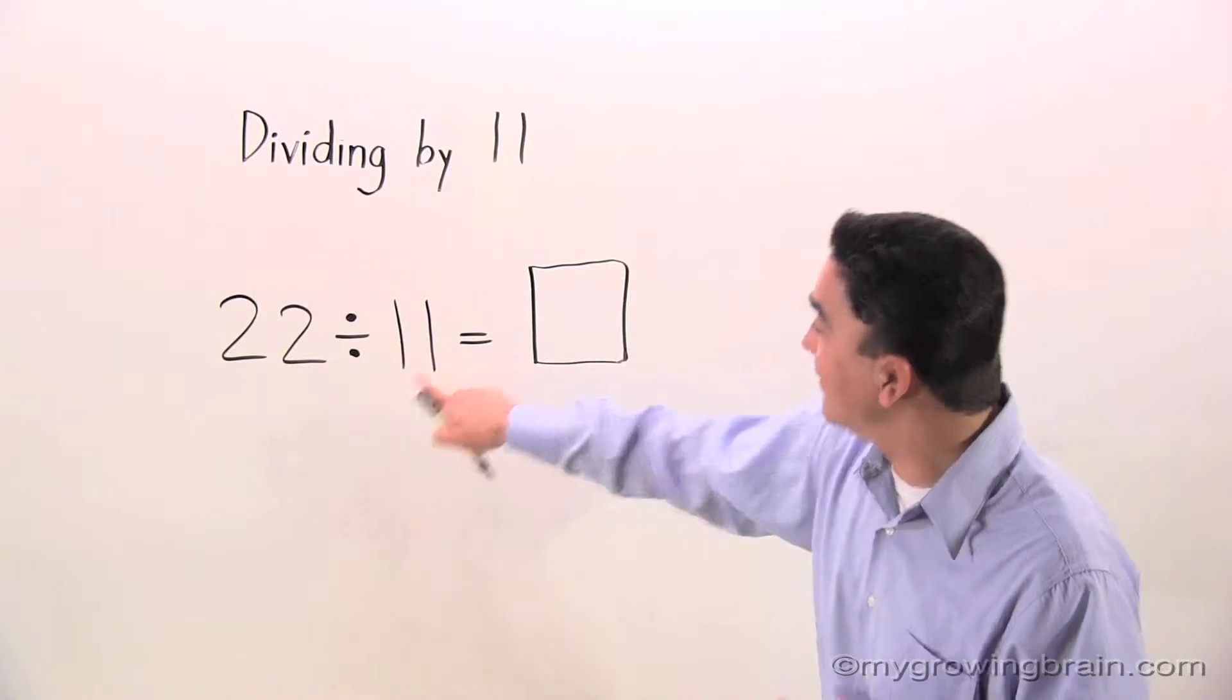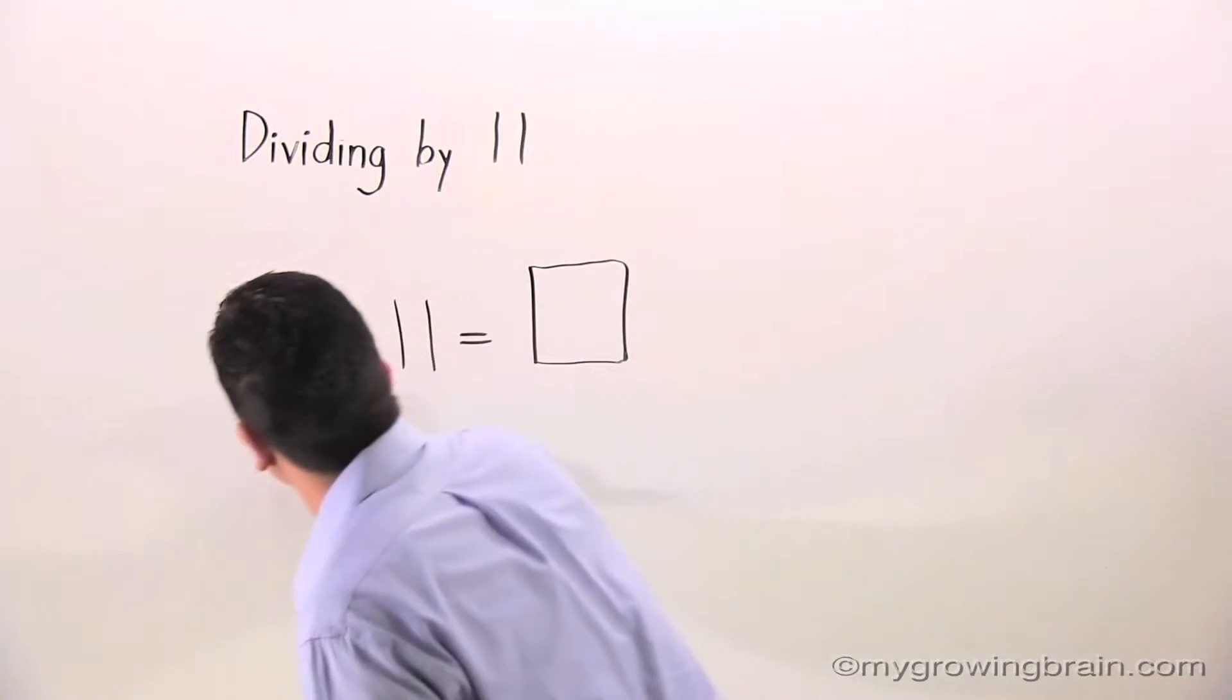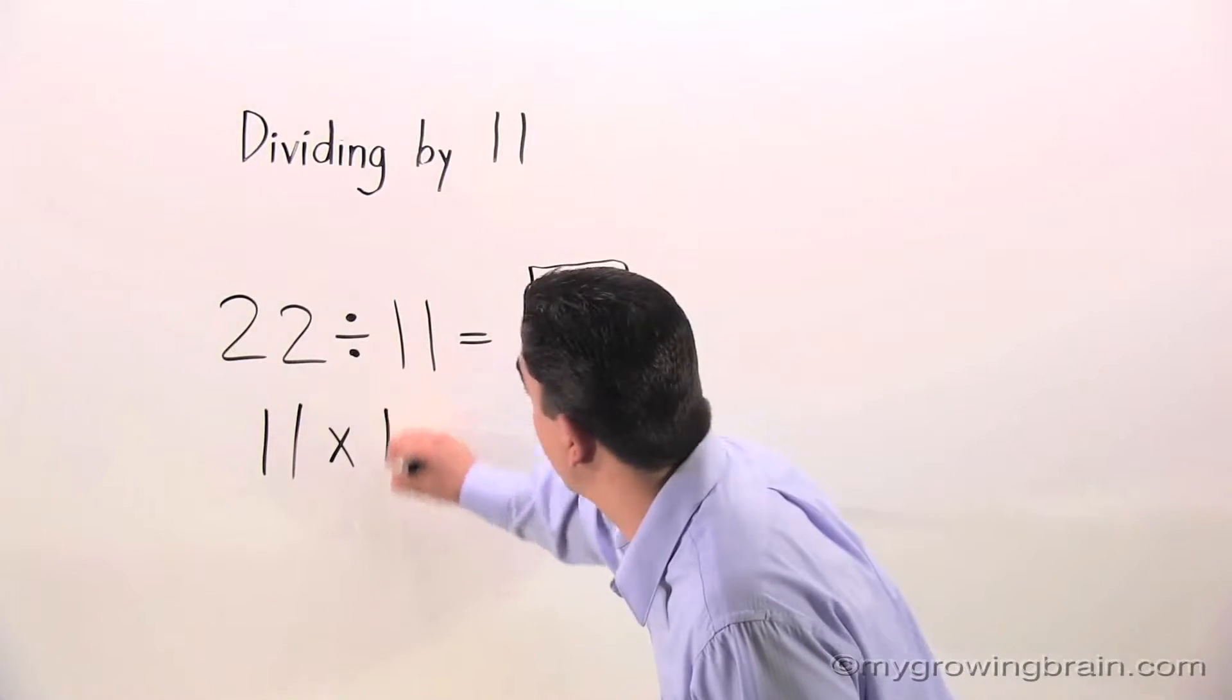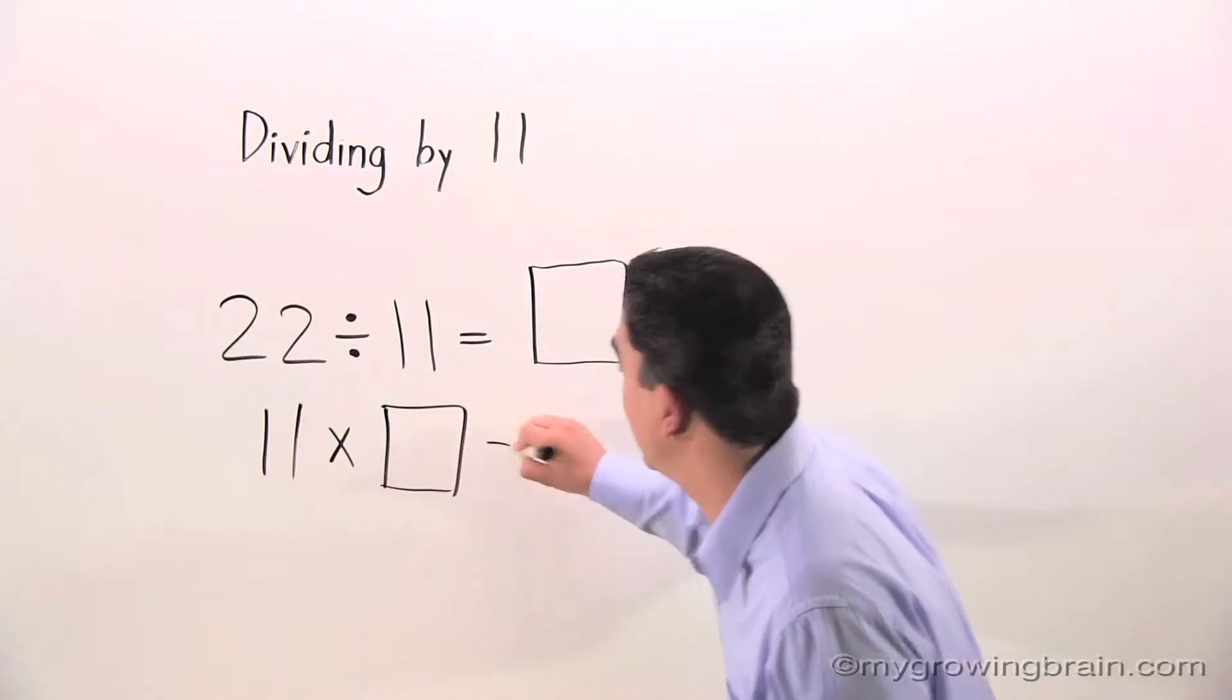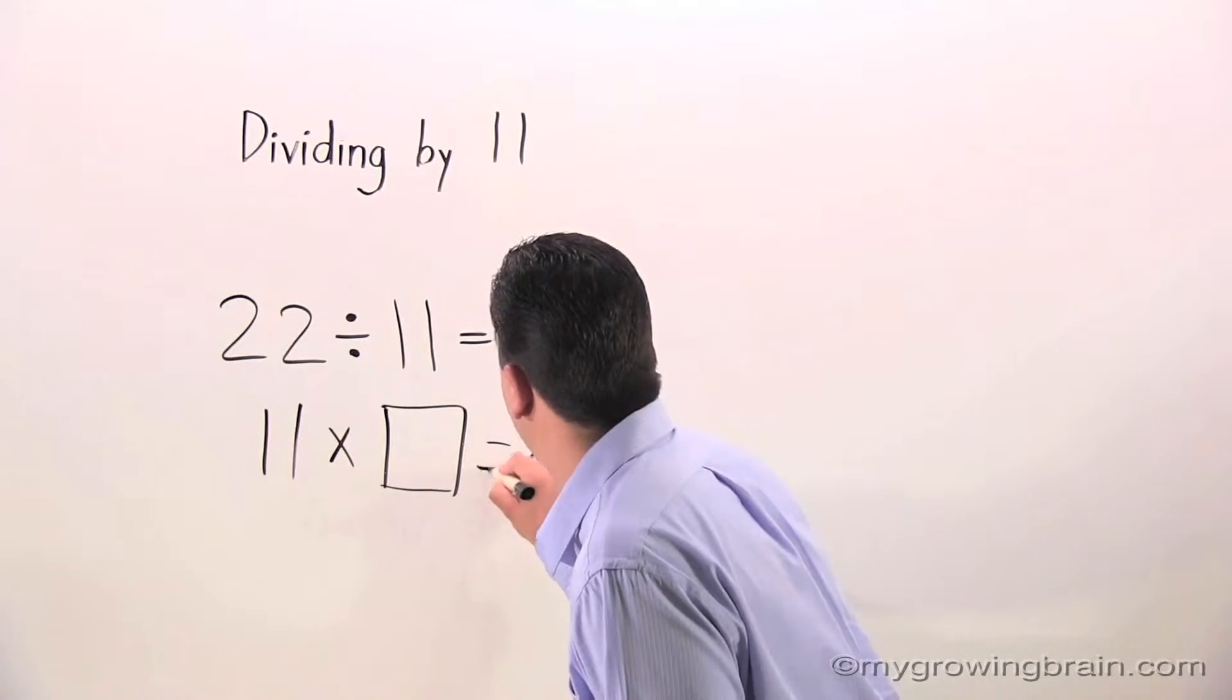11 times blank equals 22. Let's write it. 11 times blank equals 22.